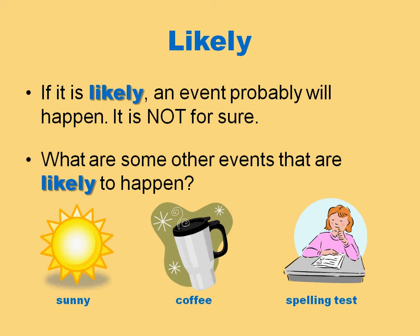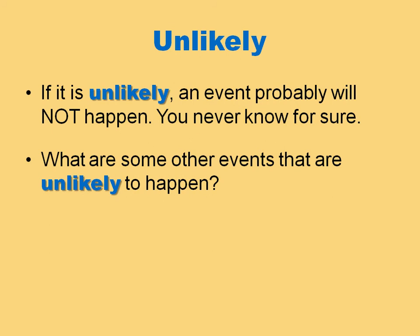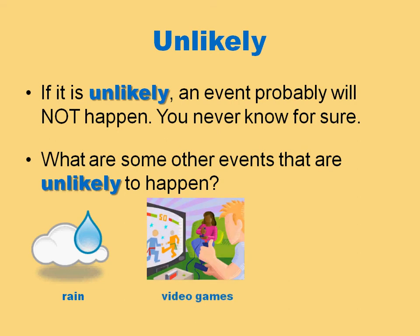If something is unlikely, an event probably will not happen — you never know for sure. What are some other events that are unlikely to happen? It is unlikely to rain; probably not going to get any big rain clouds moving in soon. It is unlikely that your mom will let you play video games all night long — maybe on the weekend, but still probably not all night. Finally, it is unlikely that your lunch will look like this.